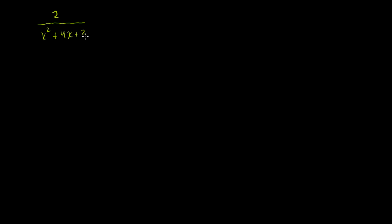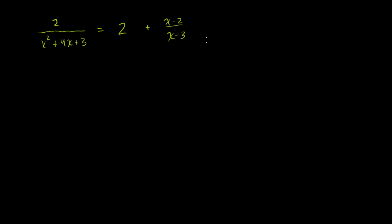Let's say I have 2 over x squared plus 4x plus 3 is equal to 2 plus x minus 2 over x plus 3. So just like we've done in the last problem and in all the other ones, we want to get all of these x's out of the denominator. And the best way to do it is to multiply every term in this equation by the least common multiple of the denominator. The first thing we might want to do is factor this — let's see if these expressions have anything in common.